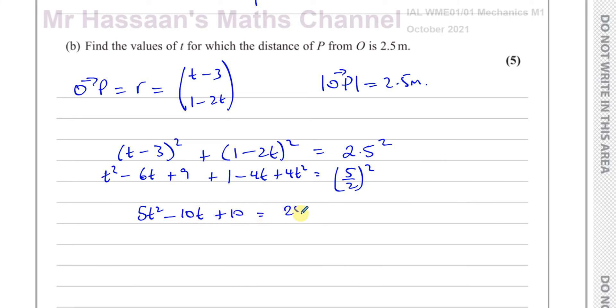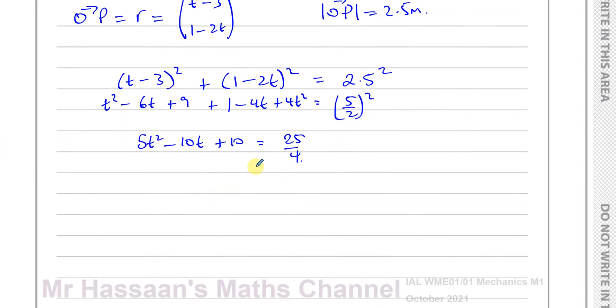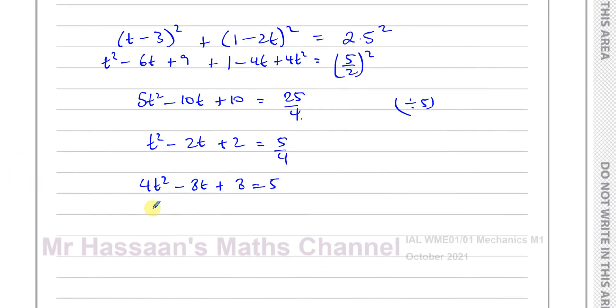Now I want to simplify this. If I divide both sides by 5, I'll have t squared minus 2t plus 2 equals 5 over 4. Then multiply both sides by 4, so I have 4t squared minus 8t plus 8 equals 5. And as it's a quadratic I will equate it to 0, so 4t squared minus 8t plus 3 equals 0.